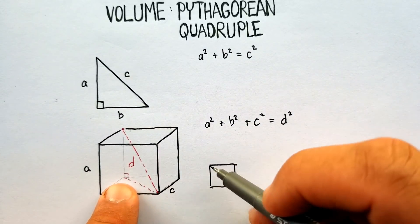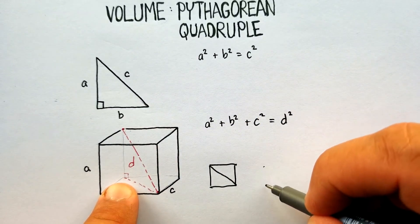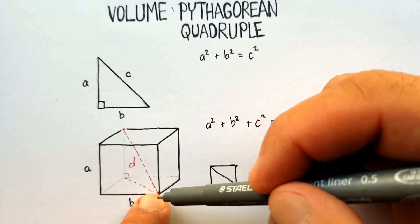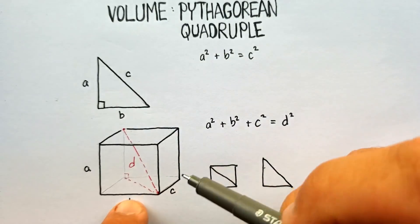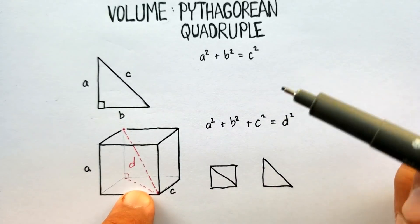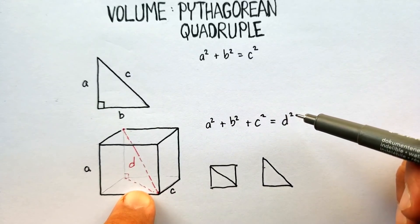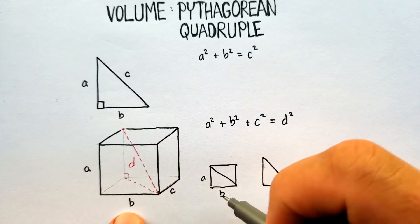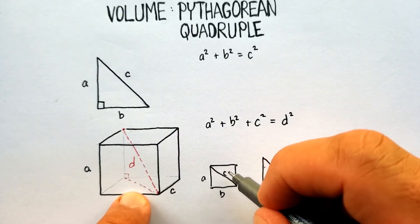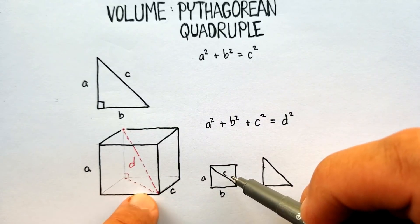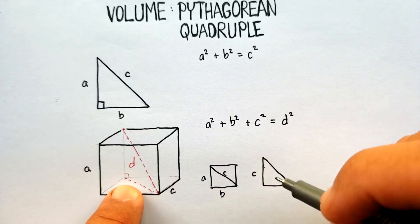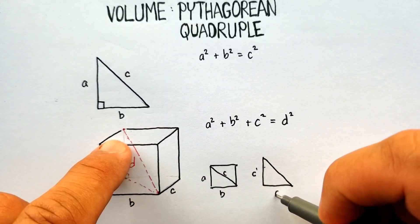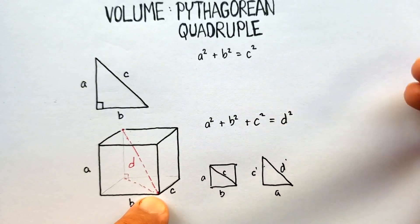Now, if I take that diagonal and go straight up — creating another diagonal — this would be a second application of the Pythagorean Theorem. So again, this would be a squared, this would be b squared, and this would be c squared. That c then becomes the new a, we'll call it c1 — the new a squared — and this new diagonal squared is the final diagonal d squared.